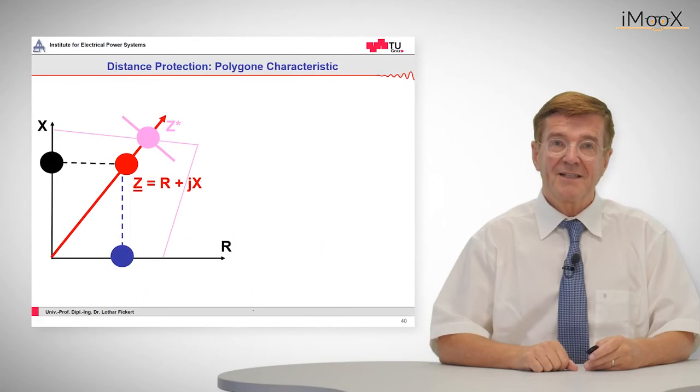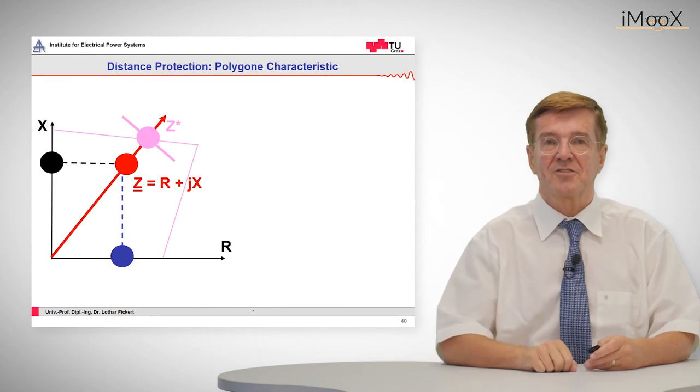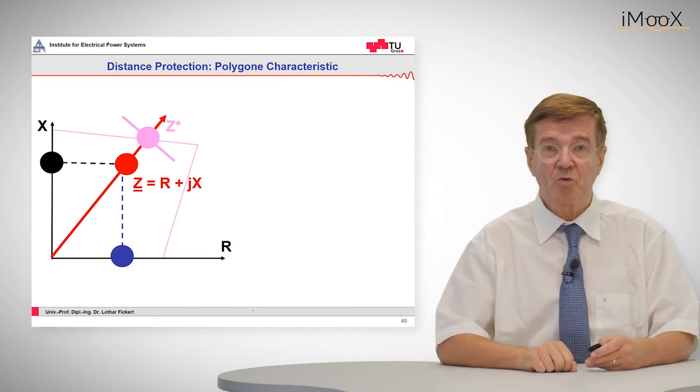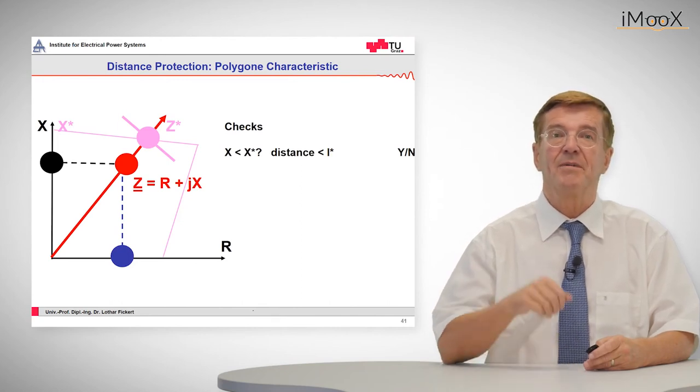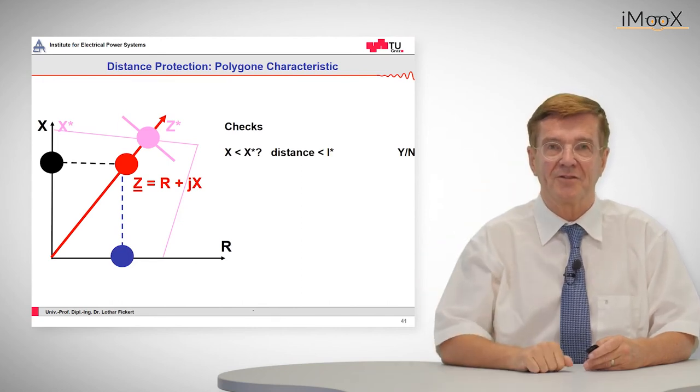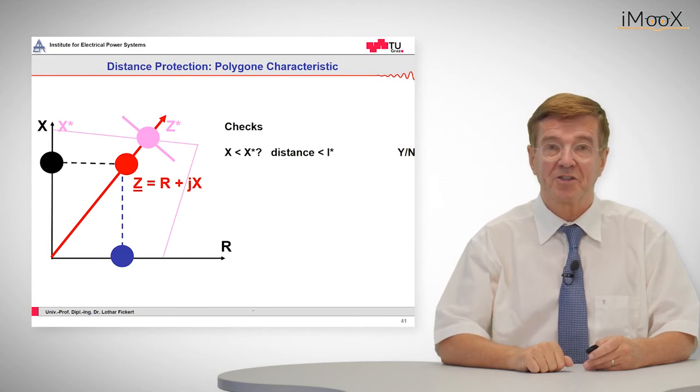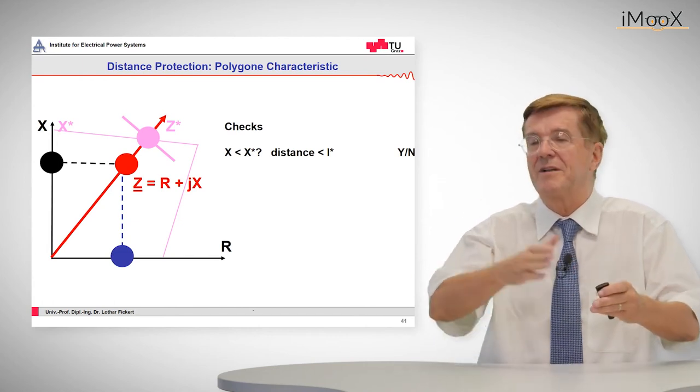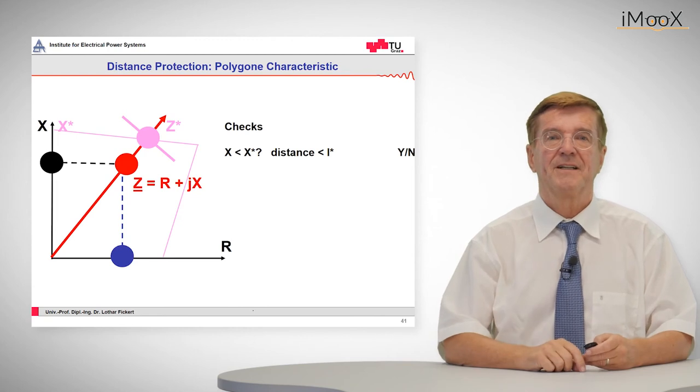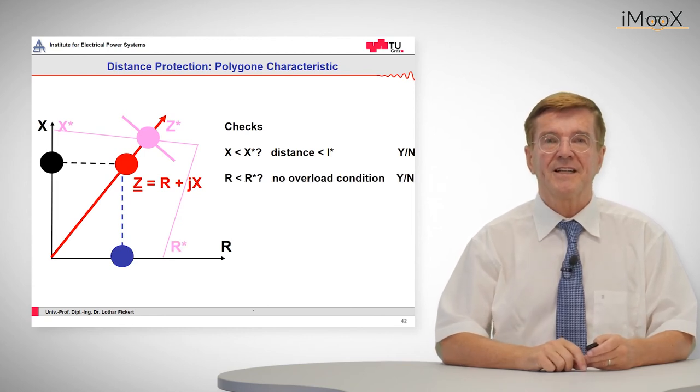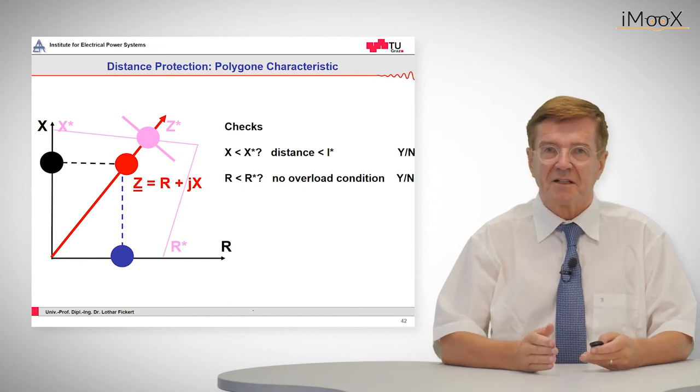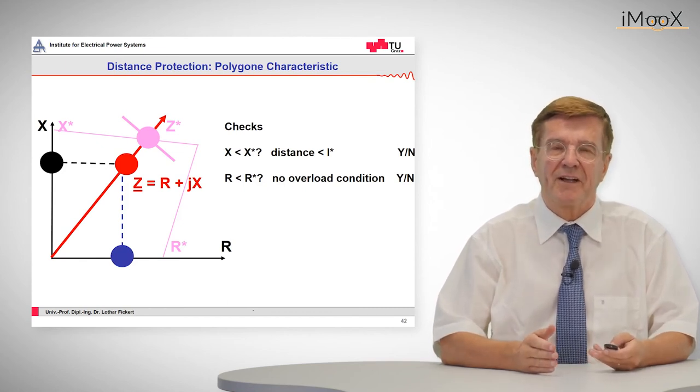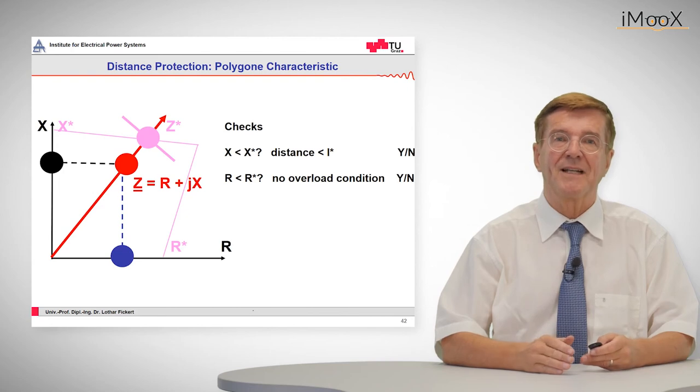So in the relays there are three conditions to be fulfilled. The most important one is, is the X that is measured by the distance relay, is it below this characteristic value, because X is proportional to the distance from the relay to the fault point. The next condition is, is the resistive part lying in an appropriate phase angle at appropriate place in this impedance plane.